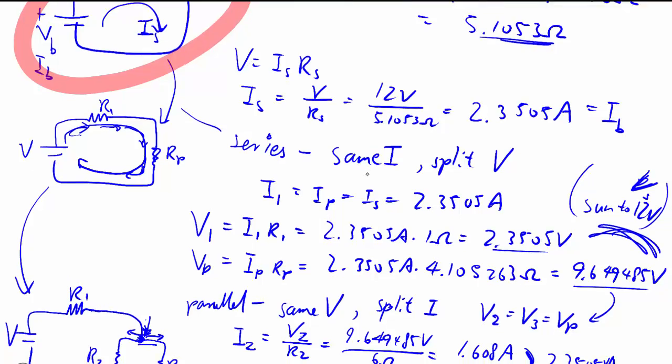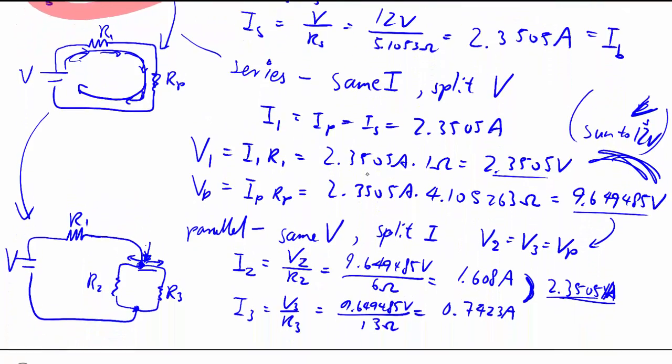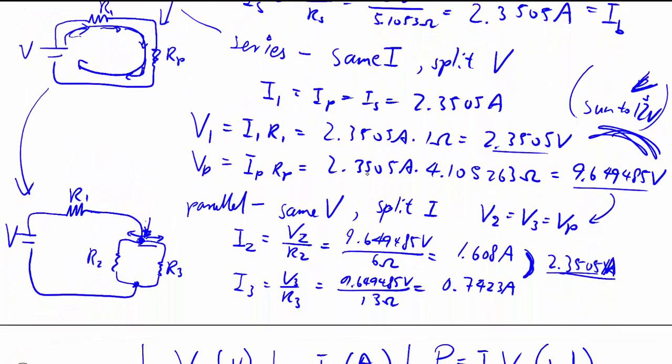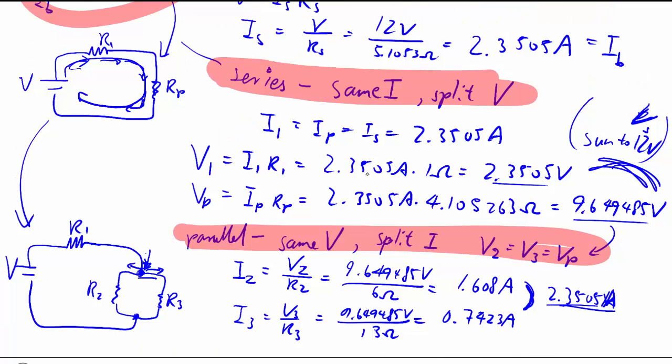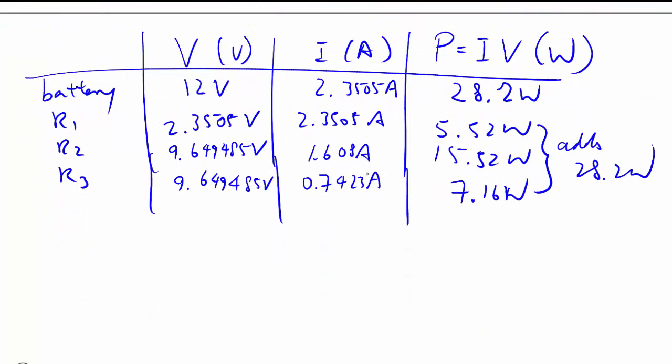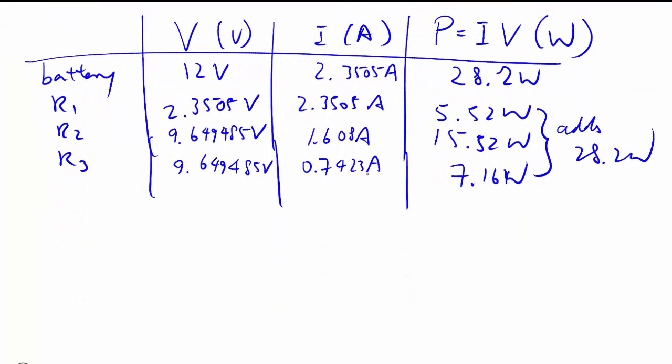And then we work backwards to expand it all back out using ideas like given in series, they should have the same current and split the voltage. Or when it's parallel, you have the same voltage but you split the current. And then you can use Ohm's law to get the one you're missing. Relating everything then, we can actually solve for everything we need.